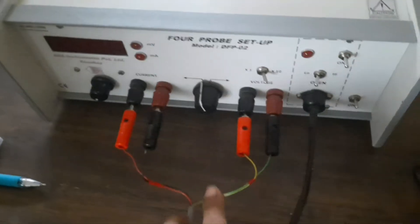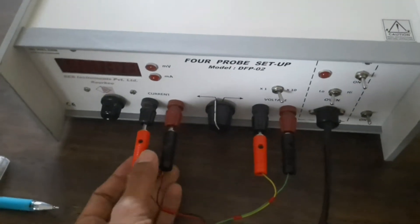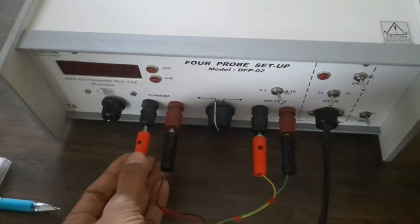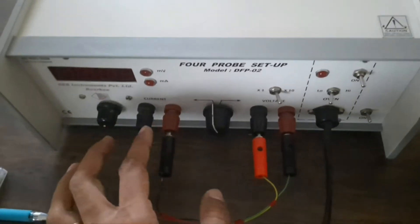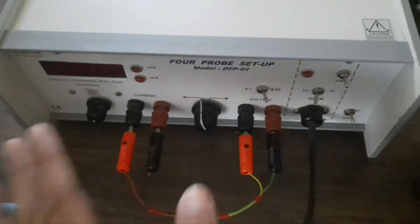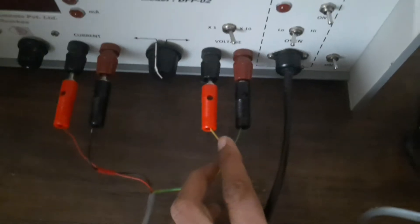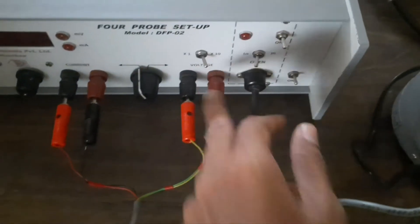As we are using 4 probes, here black and red, these 2 terminals must be connected across current to measure the current. And here the green and yellow terminals must be connected to measure the voltage.